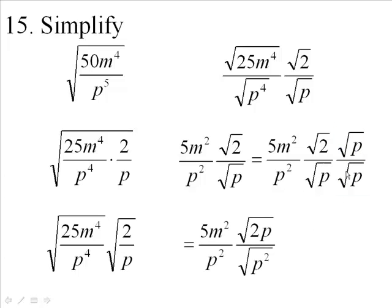The bottom will be the square root of p squared, and the square root of p squared is p. So p times p squared will be p cubed. So I'll have 5m squared times the square root of 2p over p cubed.